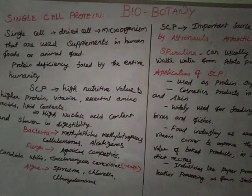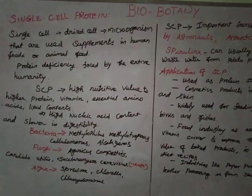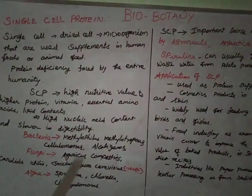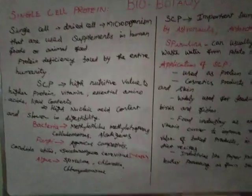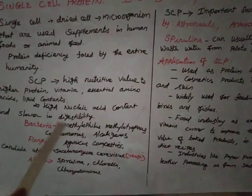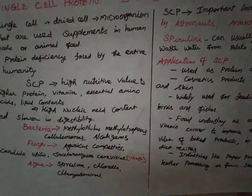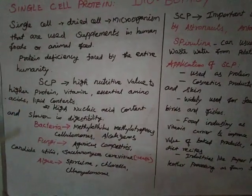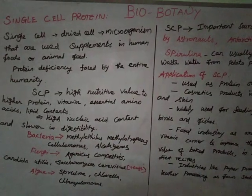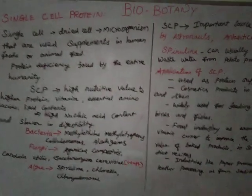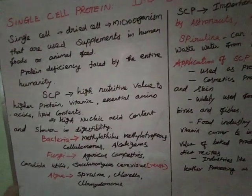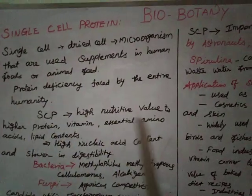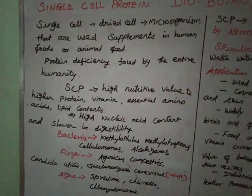Single cell protein also has high nucleic acid content, which is a concern. The digestibility process is slower than normal. It is very useful but has some limitations for human beings. The organisms used for single cell protein production include bacteria, fungi, and algae.